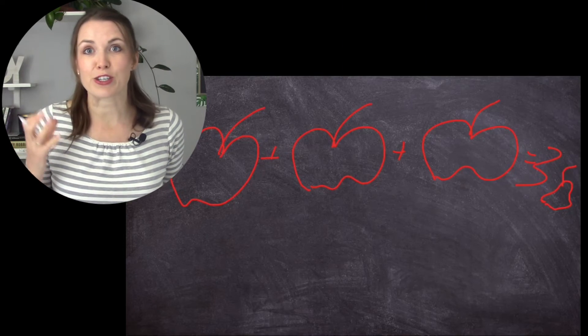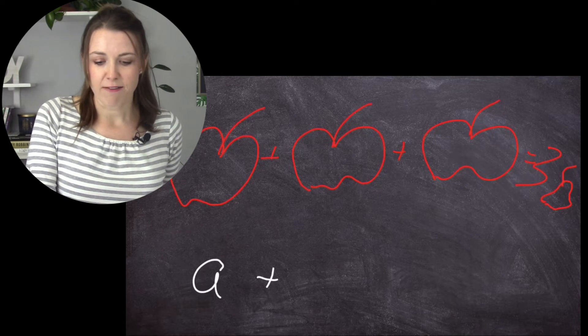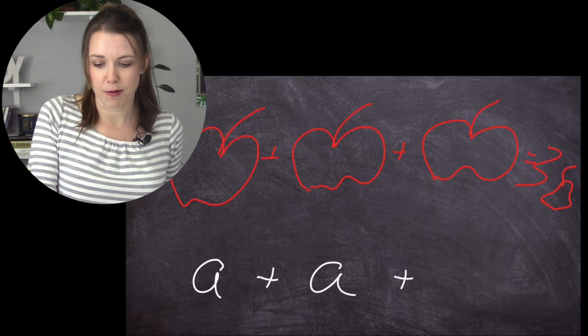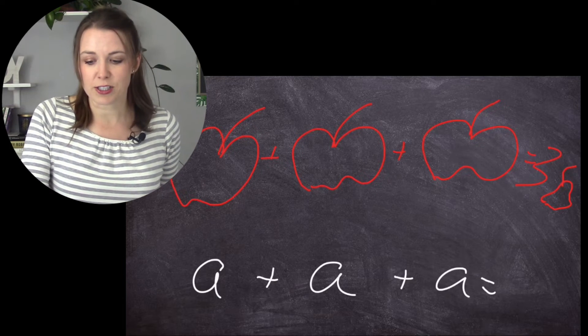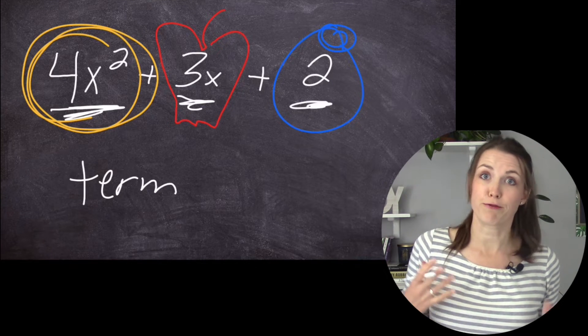But now in terms of algebra, we're actually going to use a letter. So I'm going to say A for apple plus apple plus apple. So A plus A plus A is just equal to 3A. But now let's go back to our fruit salad.